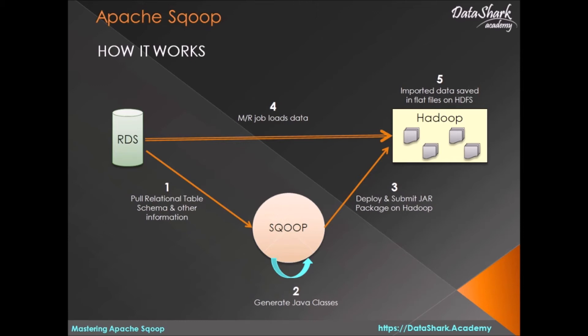Step one: Sqoop will pull the table schema details from the relational database, along with some other information about that table and database.